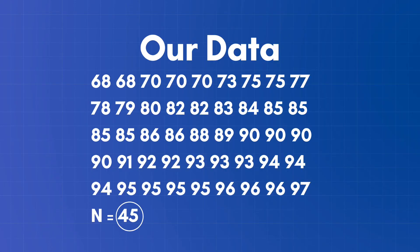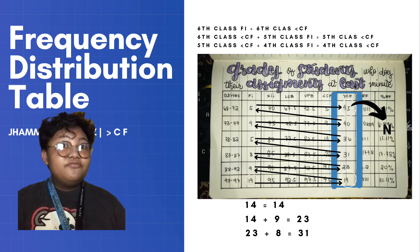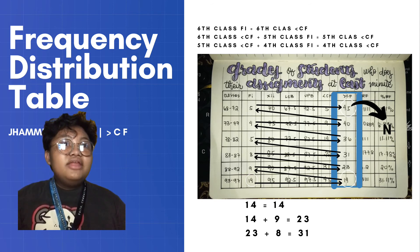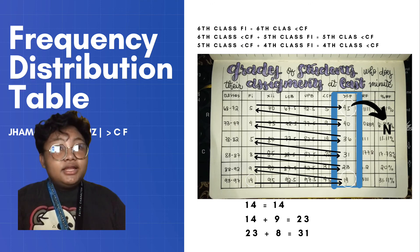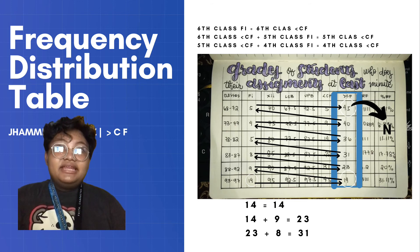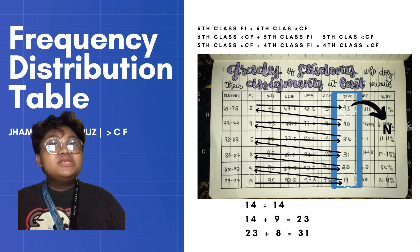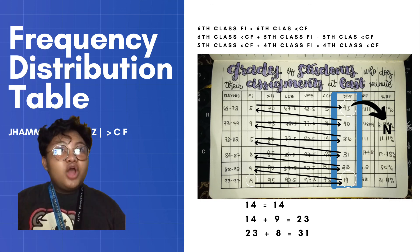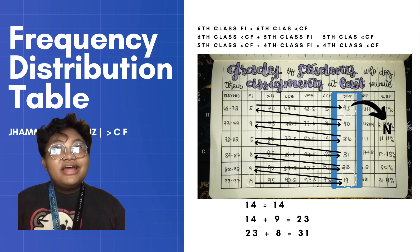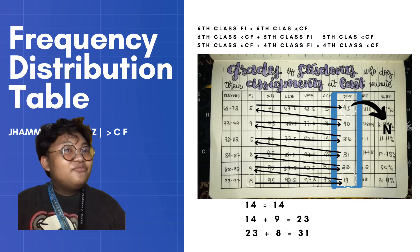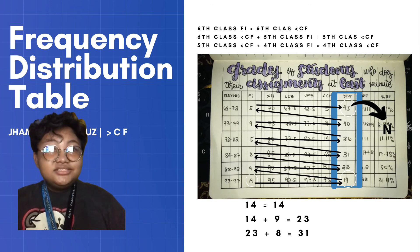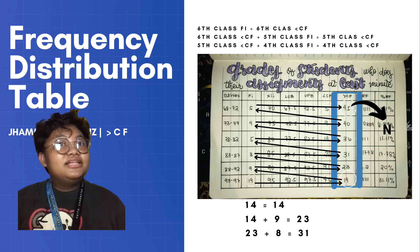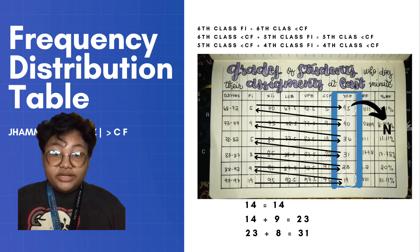After we got the less than cumulative frequency column, we can now proceed to the greater than cumulative frequency column. This is the opposite of less than cumulative frequency. We need to cite the frequency again, but this time we start with the highest frequency. We copy the sixth class frequency to become our sixth greater than cumulative frequency, then the sixth greater than cumulative frequency is added to the fifth class frequency to become the fifth greater than cumulative frequency, and so on.